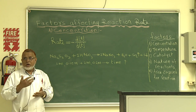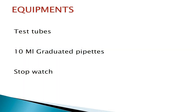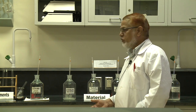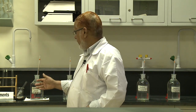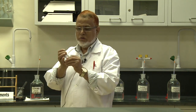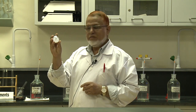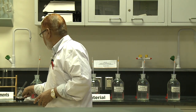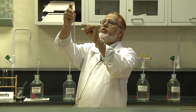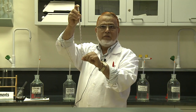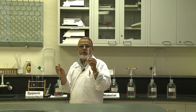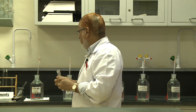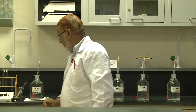Now I will explain the procedure, the equipment required, the materials required, and how to perform the experiment. For equipment, I use a stopwatch — this gives readings in seconds. I also use a graduated pipette, showing graduations from zero to five and beyond. I use two test tubes: one marked to take the acid, and another without a mark to take the sodium thiosulfate.